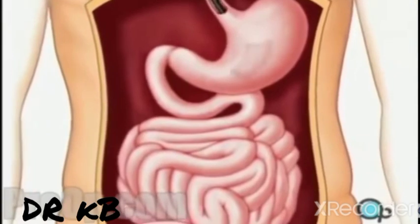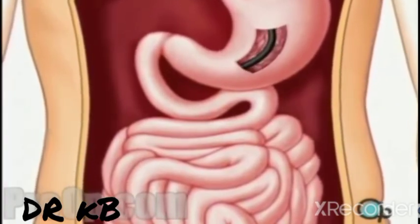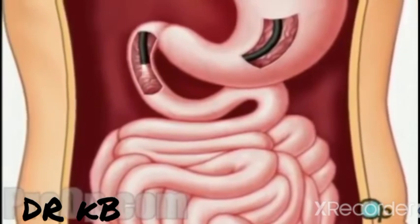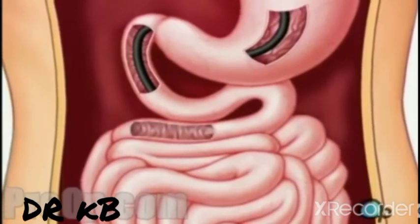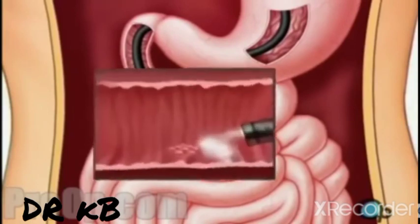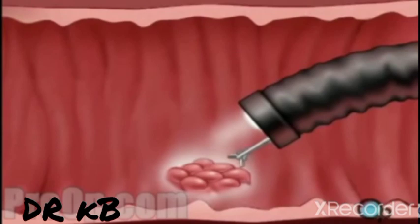The doctor will then insert the endoscope into your mouth and gently guide it towards your stomach and small intestine. To better examine abnormal looking tissues, your doctor may choose to take one or more biopsies. Small instruments sent through the interior of the endoscope are able to painlessly remove small samples of tissue with a small scissor-like tool by simply snipping them free.